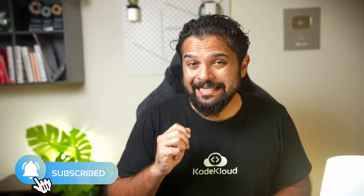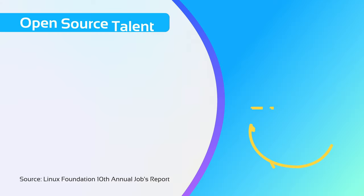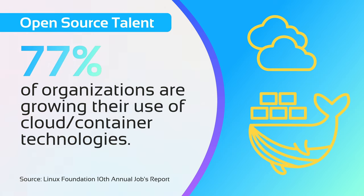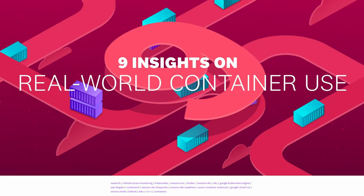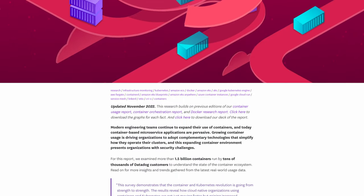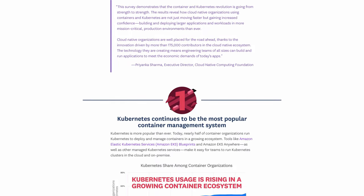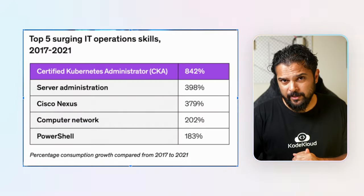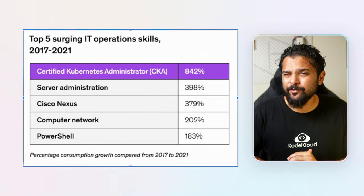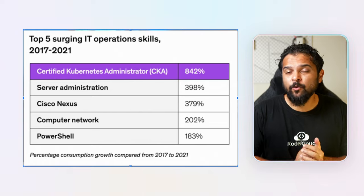Kubernetes is today's Linux operating system for the cloud. As reported by the Linux Foundation's 10th Annual Jobs Report, 77% of organizations are growing their use of cloud and container technologies. The 2022 container report by Datadog found that nearly half of all organizations using containers run Kubernetes to deploy and manage at least some of their containers. No wonder engineers are flocking to learn Kubernetes, and no wonder the CKA exam is one of the most trending IT certifications today. The Udemy for Business Workplace Learning Trends report indicated an 842% increase in CKA course consumption.